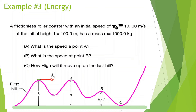Let's look at this next question — a frictionless roller coaster with initial velocity of 10 meters per second and initial height of 100 meters. What is the speed at point A? Since this is frictionless and the coaster comes back to the same height at point A, it has the same potential energy, meaning the same kinetic energy and therefore the same speed — still 10 meters per second.